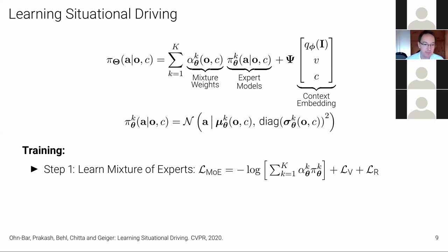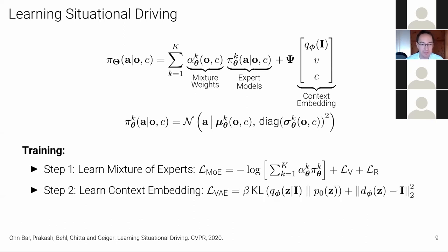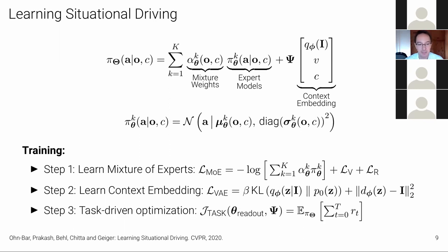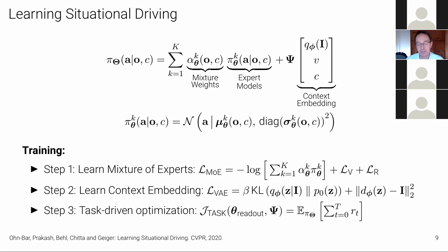The training steps are: first, learn the mixture of experts; second, learn the context embedding; third, perform task-driven policy refinement by interacting with the simulation using rewards. The first two steps are pure supervised training. The third step uses reinforcement learning — or in our case CMAES for on-policy learning. Because of the credit assignment problem, we can't backpropagate to all parameters in the big model, so we only do this for the readout layer. We pre-train the experts and context embedding, then learn to combine them via a linear combination with mixture weights.